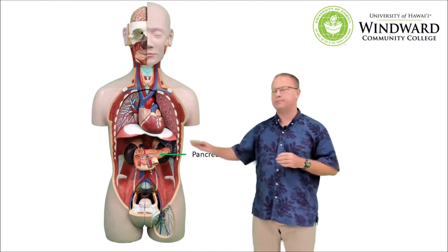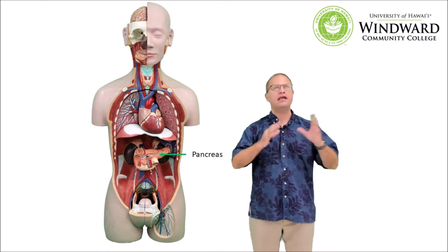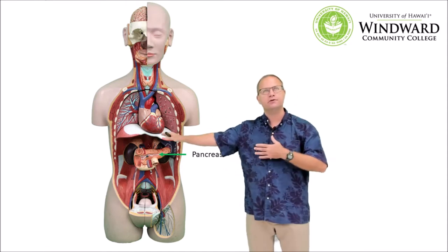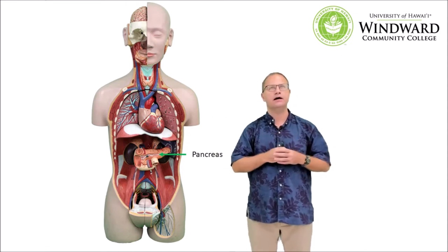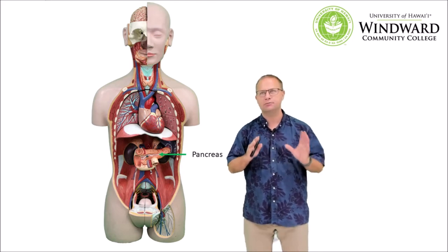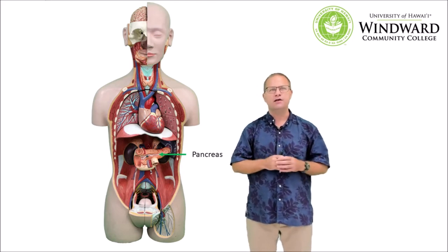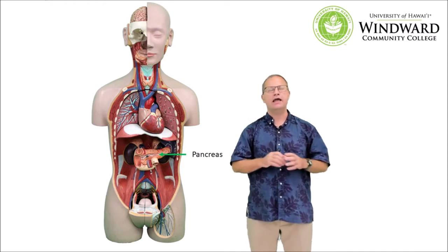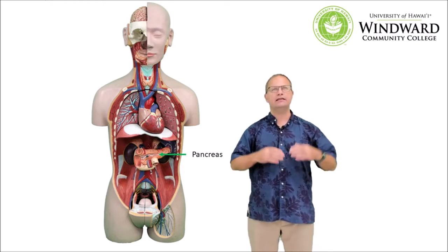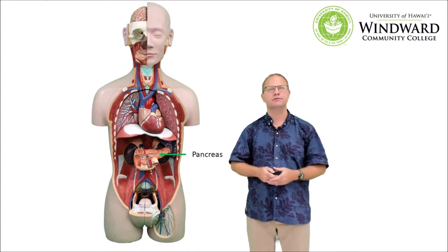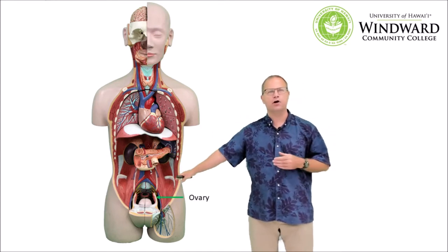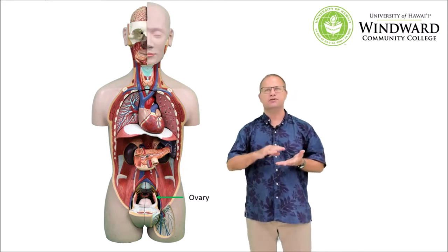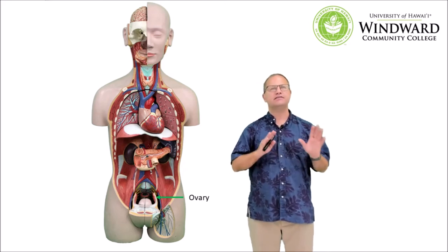The next organ is the pancreas, and the pancreas is both endocrine and exocrine in function. It produces endocrine hormones like insulin and glucagon, but it also produces exocrine products such as enzymes. The endocrine products of the pancreas are insulin and glucagon, and these are two hormones that help to regulate levels of blood glucose. Finally we have the gonads, which are important in producing hormones such as estrogen and progesterone in females, and testosterone in males.